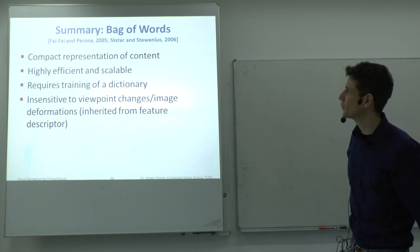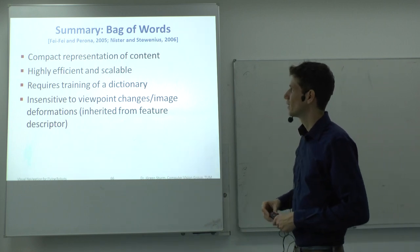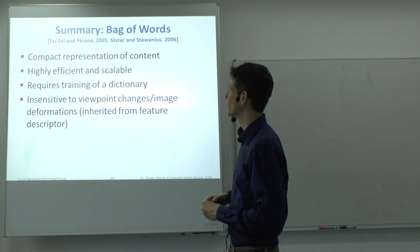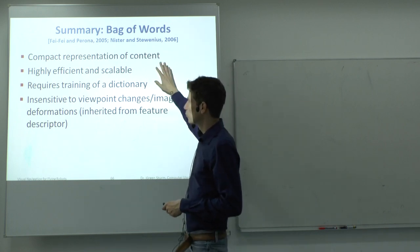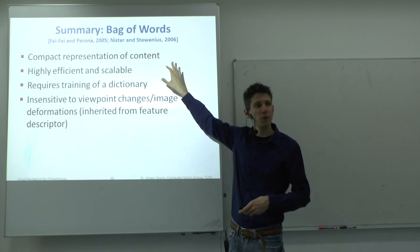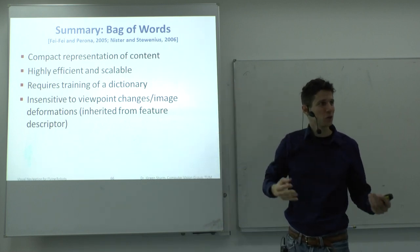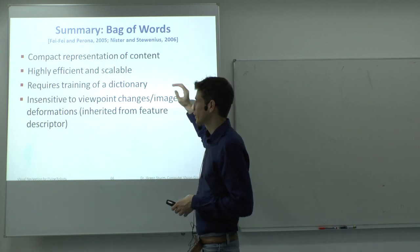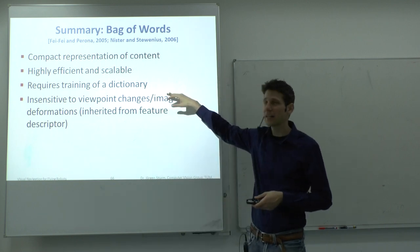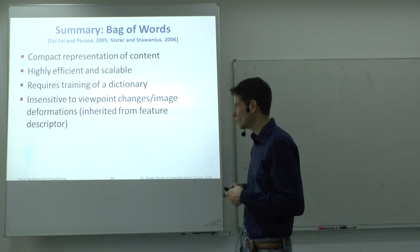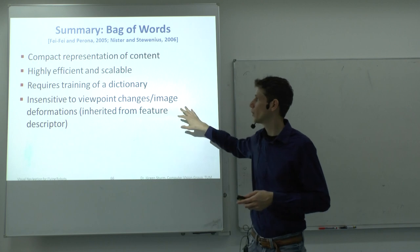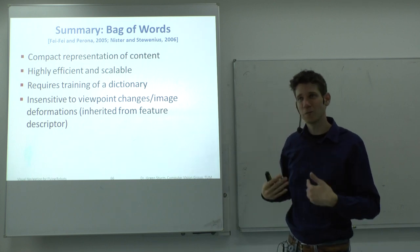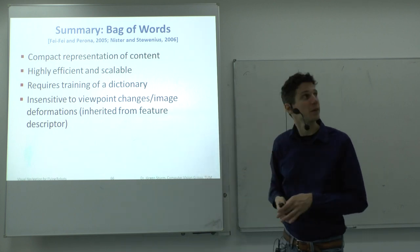Summary of place recognition: the bag of visual words gives a compact representation of image content. It can be used for object recognition and scene recognition, is very efficient, scales well, requires pre-training of a dictionary, and is insensitive to viewpoint changes or image deformations because the image descriptor already provides those invariances.